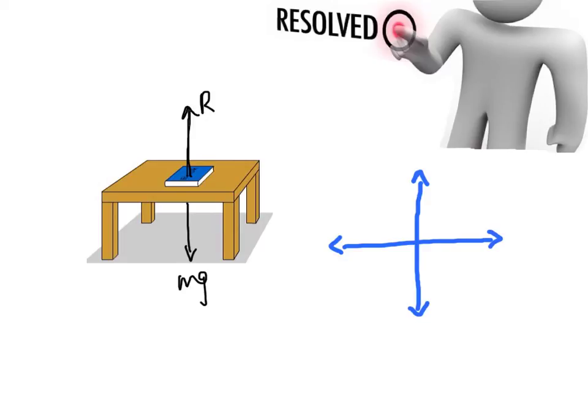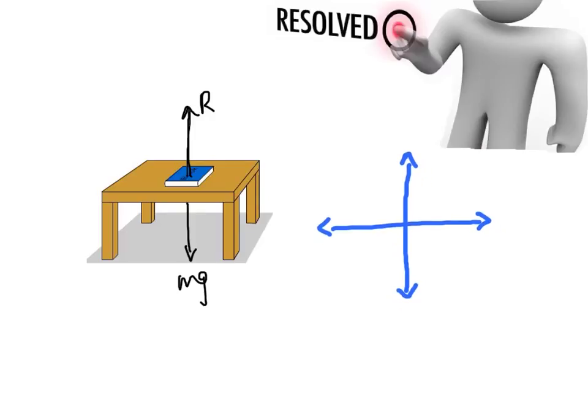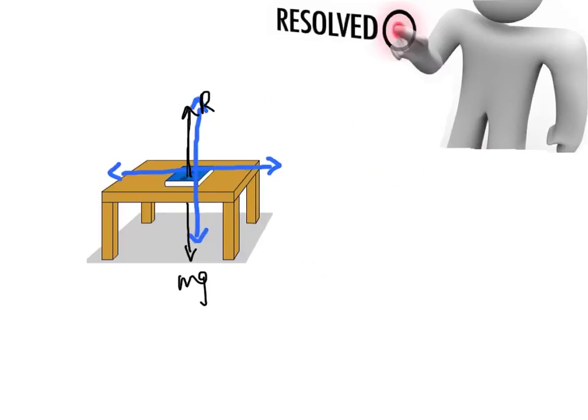In this video we're going to look at resolving forces on a force acceleration diagram, and then in the next video we're going to talk about how to use those resolved forces to make some equations. Basically what we're doing is taking our force diagram and trying to put a set of axes — an xy axis — on top of our force diagram so that all our forces are underneath that set of axes.